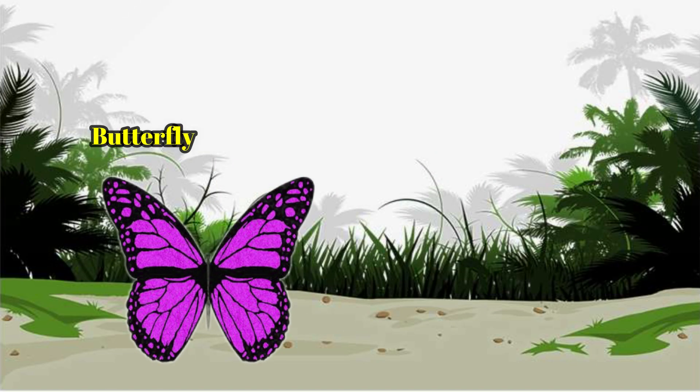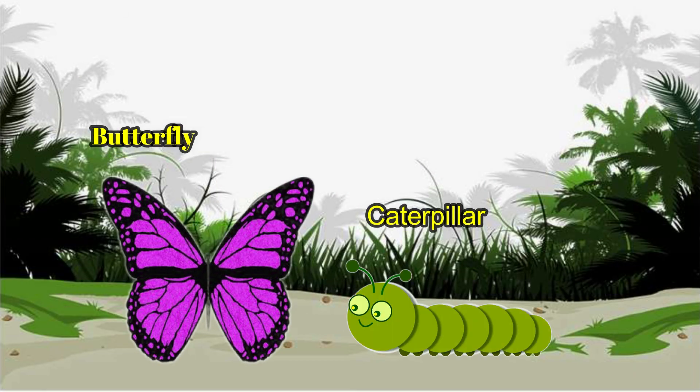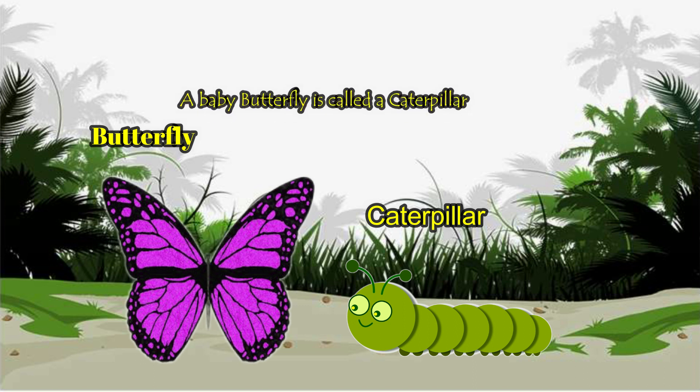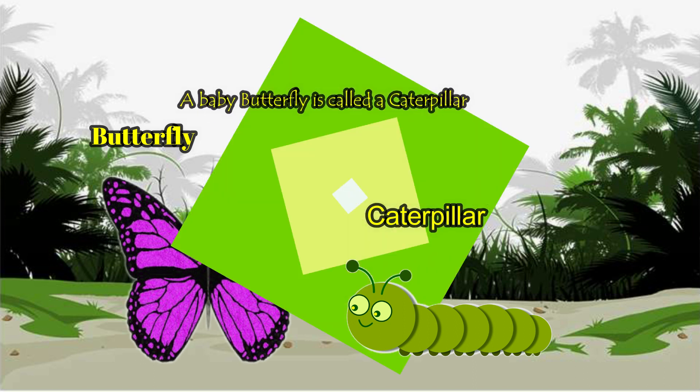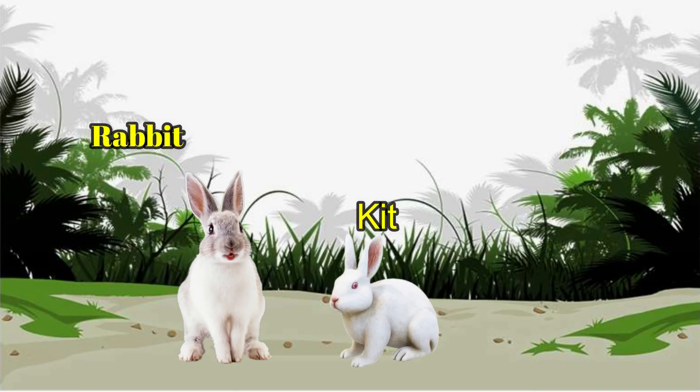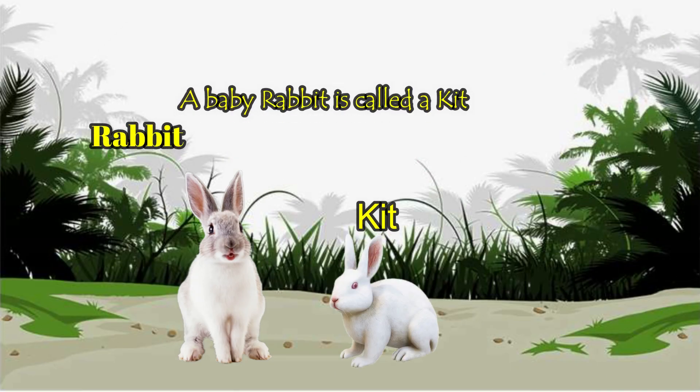Butterfly. Caterpillar. A baby butterfly is called a caterpillar. Rabbit. Kit. A baby rabbit is called a kit.